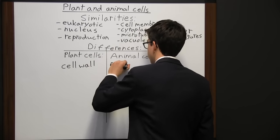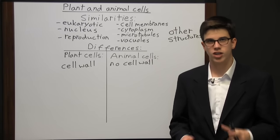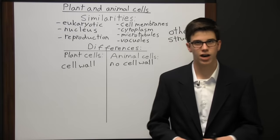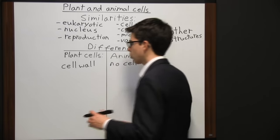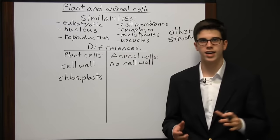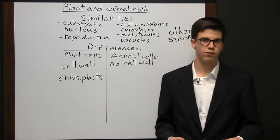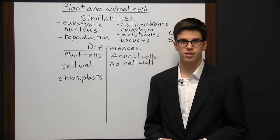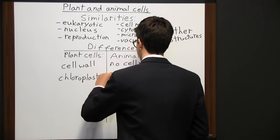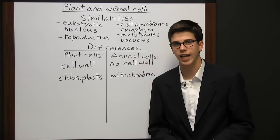Plant cells have chloroplasts, which come in handy during photosynthesis — the conversion of sunlight into food. Chloroplasts absorb sunlight and convert it into energy. Animal cells use mitochondria, which produce energy from food. Another difference is that plant cells have a regular shape — they pretty much always look the same — while animal cells can have many possible shapes.